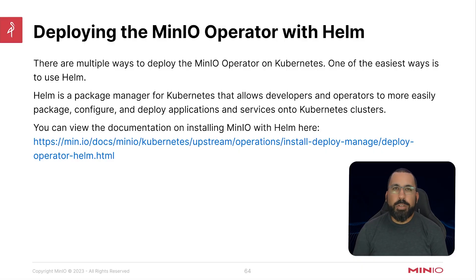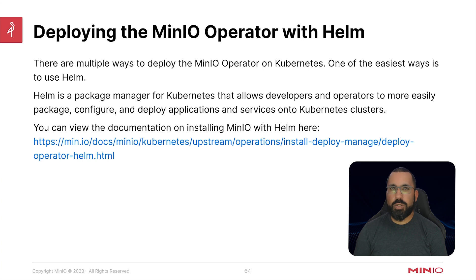There are multiple ways to deploy the MinIO Operator on Kubernetes, and one of the easiest ways is to use the Helm package manager. Helm is a package manager for Kubernetes — it allows developers and operators to easily package, configure, and deploy applications and services onto a Kubernetes cluster. It also lets you version-control your Helm deployments so you can roll back between different versions and do complex deployments.